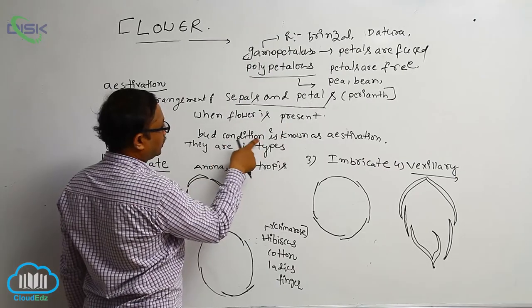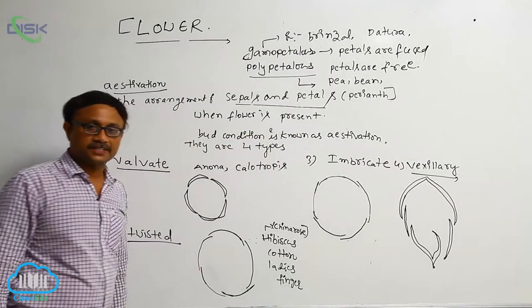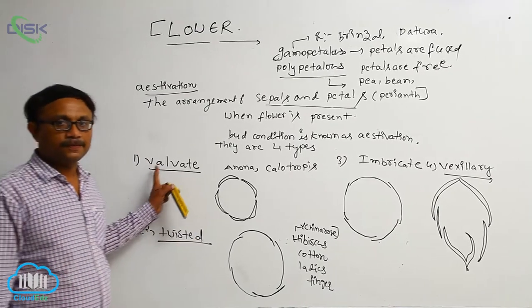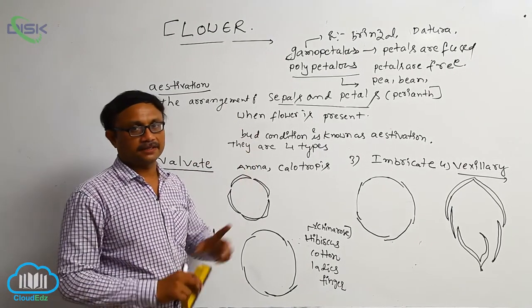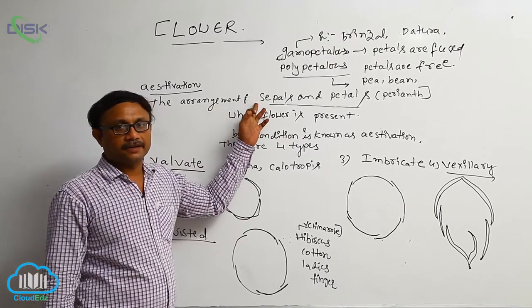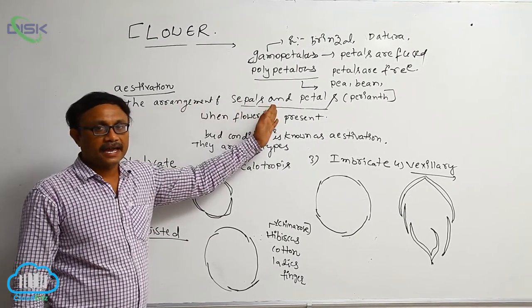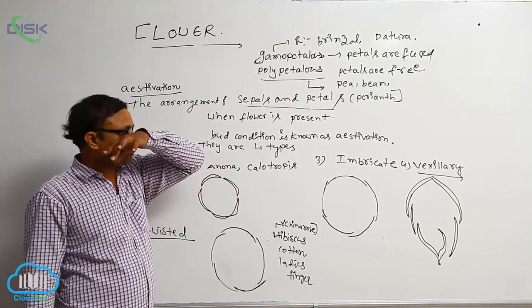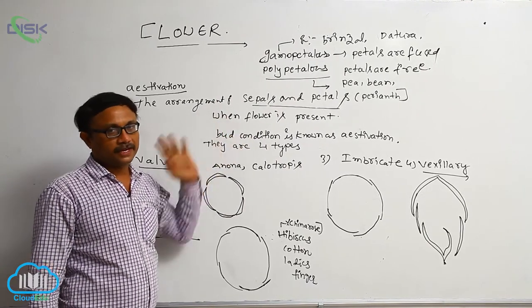The bud condition is known as aestivation. The definition of aestivation: the arrangement of sepals and petals — that is, the perianth — when the flower is in bud condition is known as aestivation. Aestivation is mainly of four types.